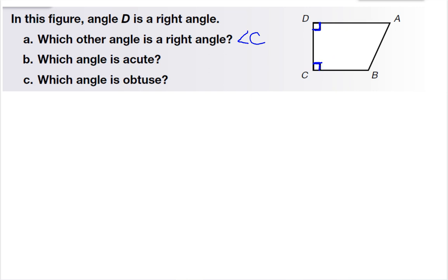Now, it doesn't always have to have a square, but just know if the two lines are perpendicular, which means vertical and horizontal, at a 90 degree angle, then we know that it's a right angle.